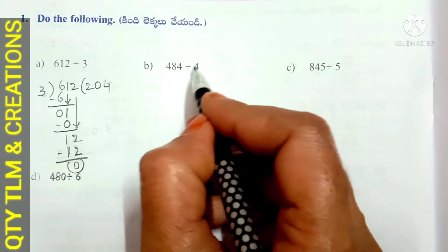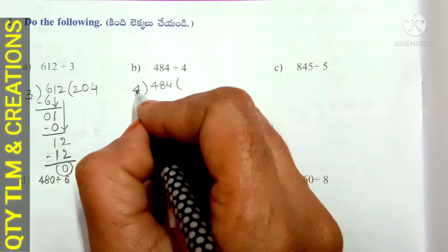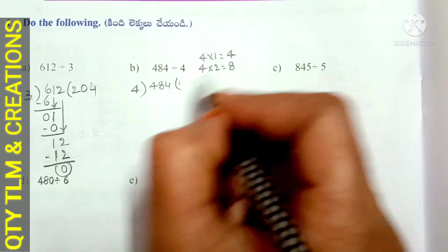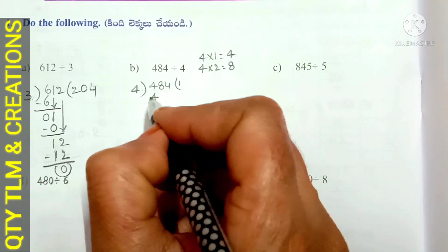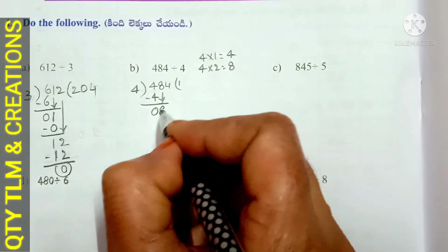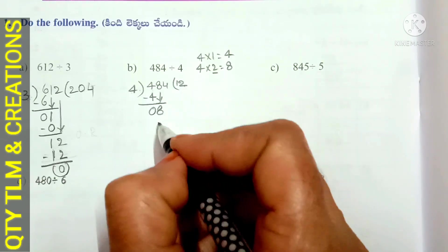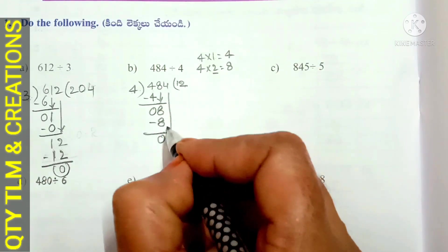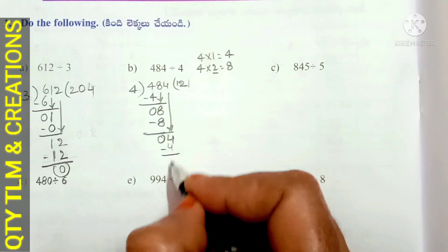Next, B. 484 divided by 4. We start division from the highest place value. Here it is 4. 4 divides 4 for 1 time; 4 ones are 4. Write 1 in quotient. Subtract 4 from 4, we get 0. Bring down 8. 4 divides 8 for 2 times; 4 twos are 8. Subtract 8, we get 0. Bring down 4. 4 divides 4 for 1 time; 4 ones are 4. Remainder is 0, quotient is 121.